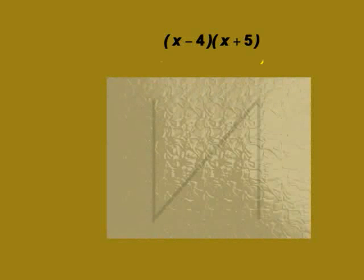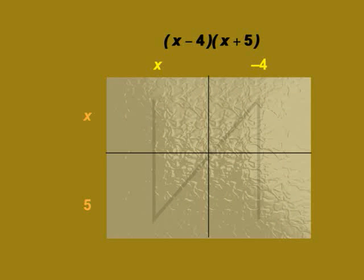Here is an example with one negative term. Start with the FOIL background and arrange the terms in rows and columns. Use the inverted N to arrange the first, outside, inside, and last terms. Combine terms to find the expanded product.